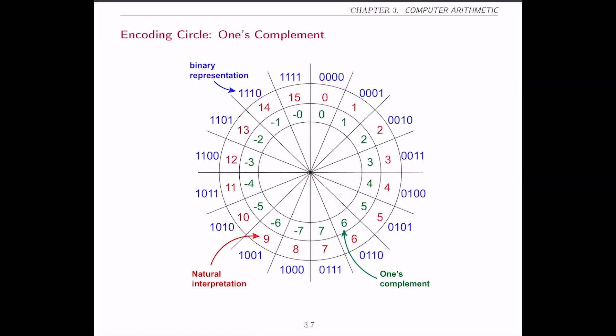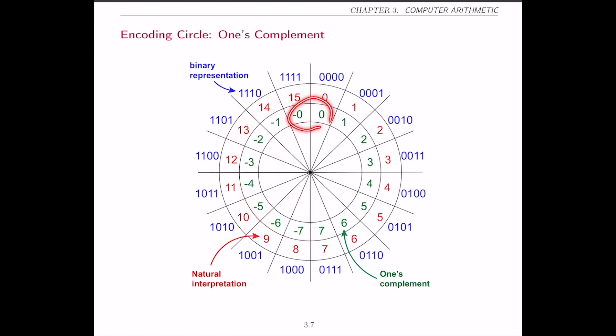In this video we will learn how to represent numbers in 2's complement. In the previous video we saw how 1's complement has the issue of two zeros, so if you want to do additions it doesn't quite work — if you add 1 to minus 1 you get 0, but if you add 1 to 0 you also get 0 back.